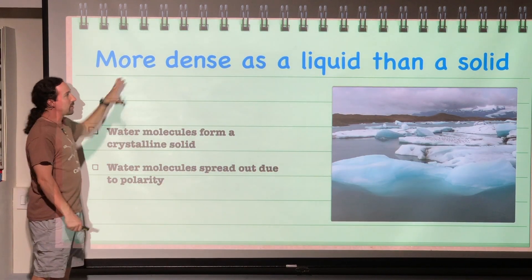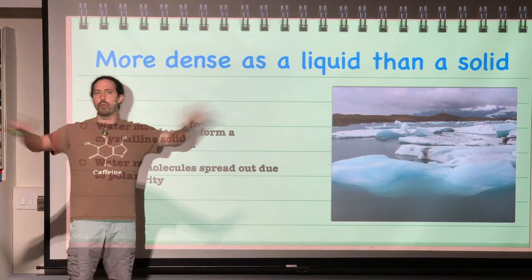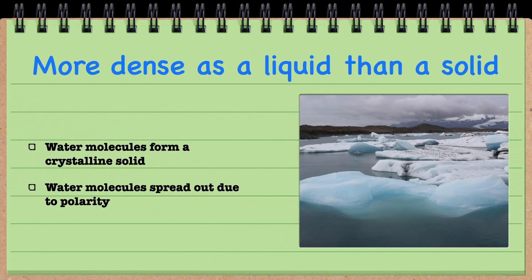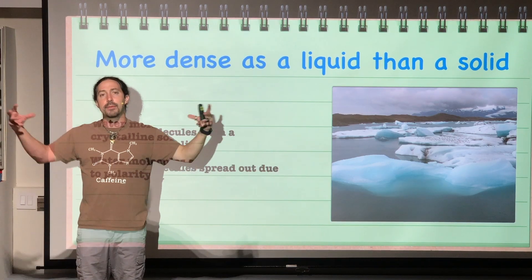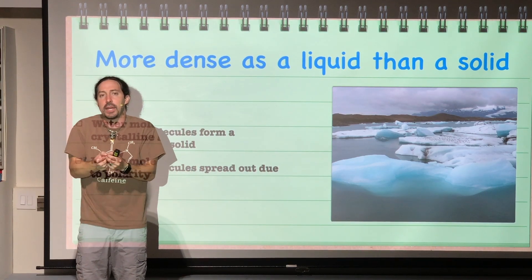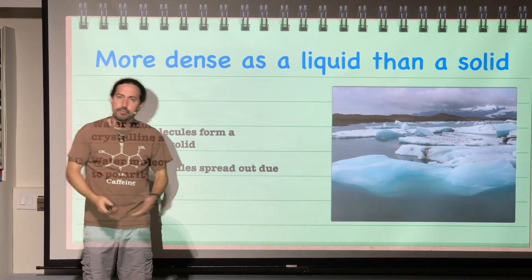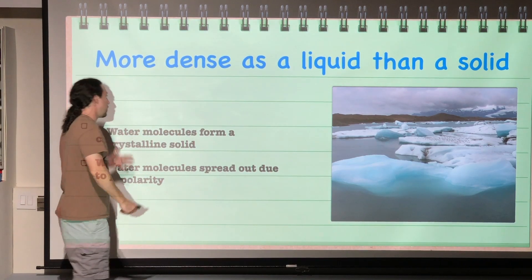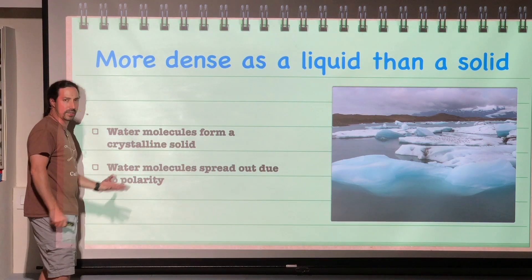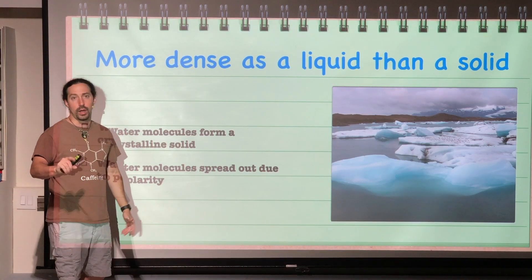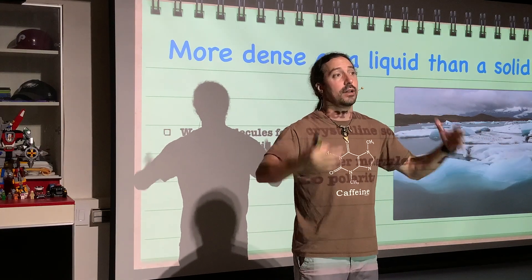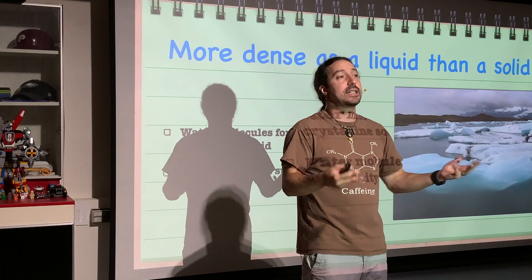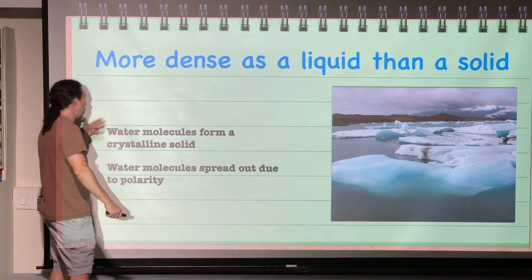Next, water is more dense as a liquid than as a solid. This is unusual because normally as you go from gas to liquid to solid, things condense — they get closer and closer together. But not water. Water molecules actually spread out as they go from liquid to solid, which is different from virtually every other molecule we know of. Water spreads out as it becomes a solid because it forms something called a crystalline solid.